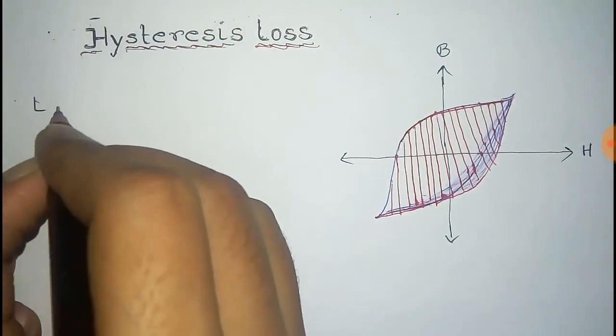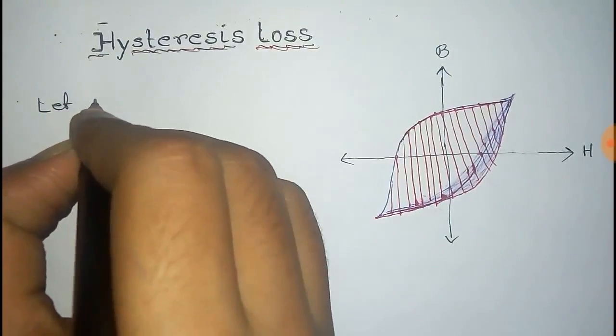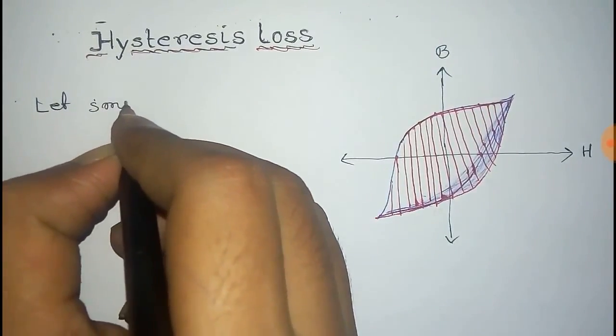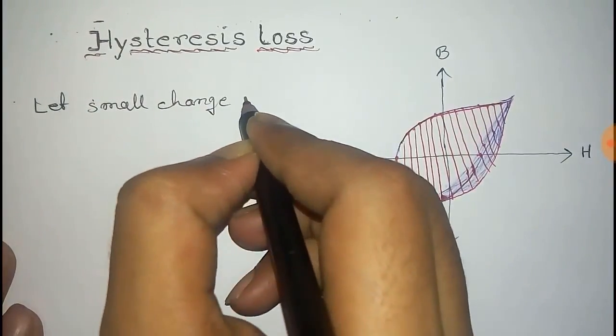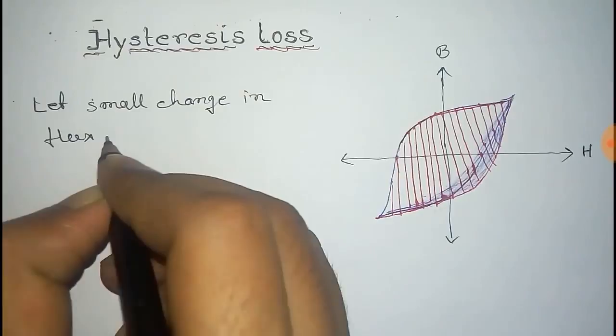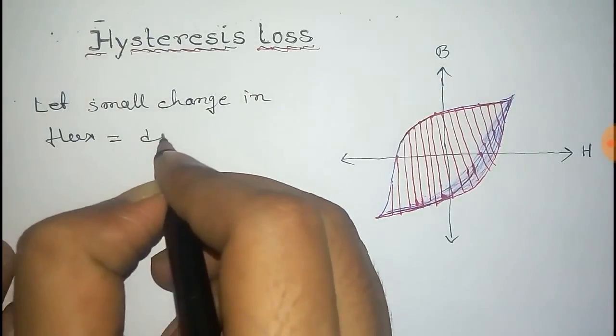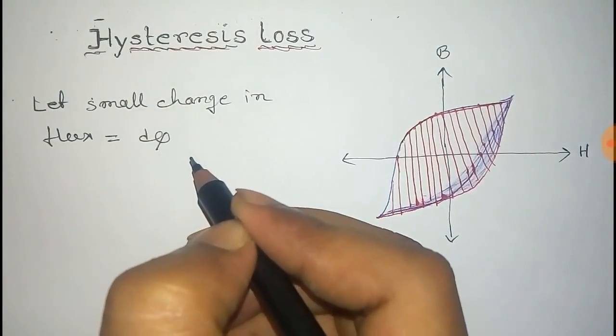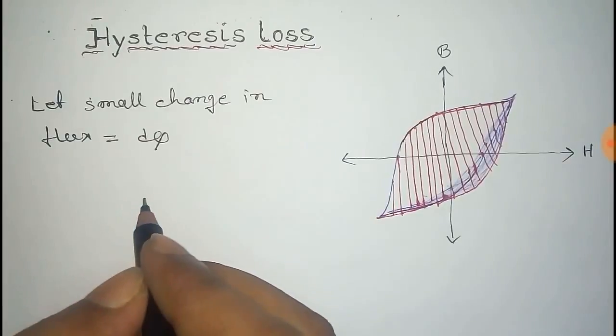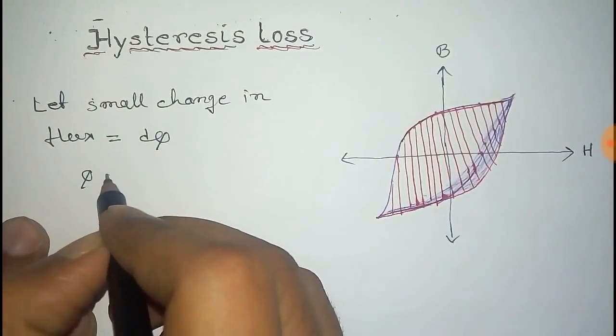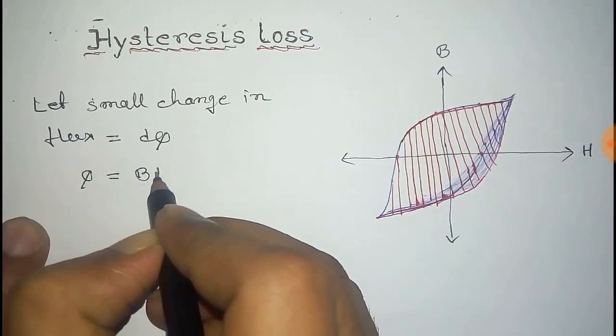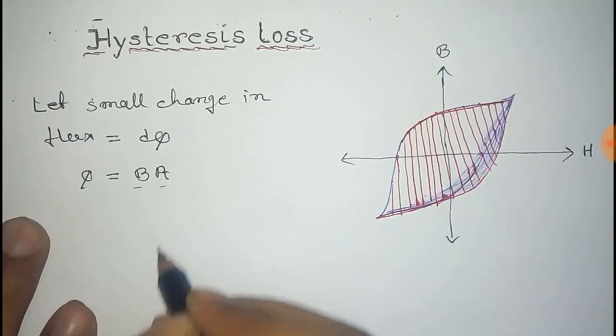Let small change in flux in this process be dφ. So φ equals B into A, that is, flux equals B into A. Here B is the magnetic field and A is the area of the core.